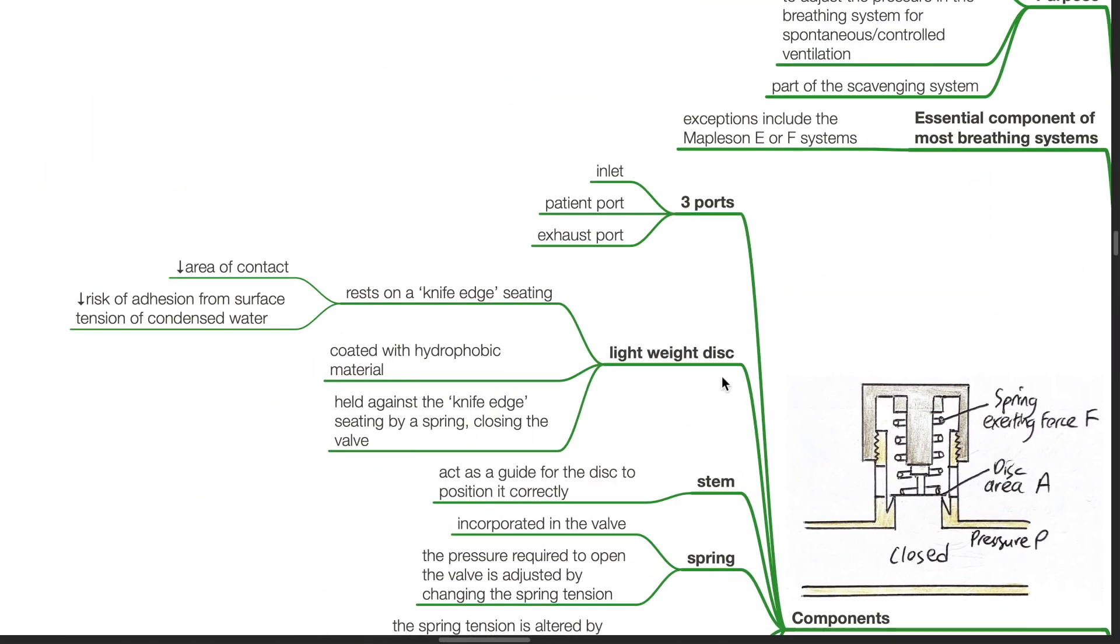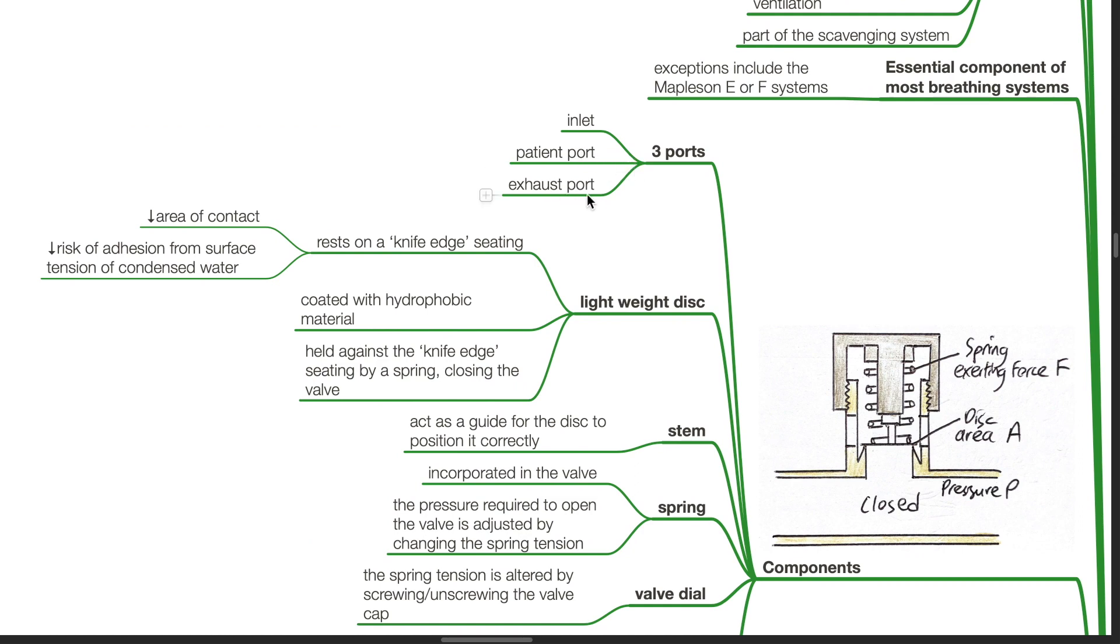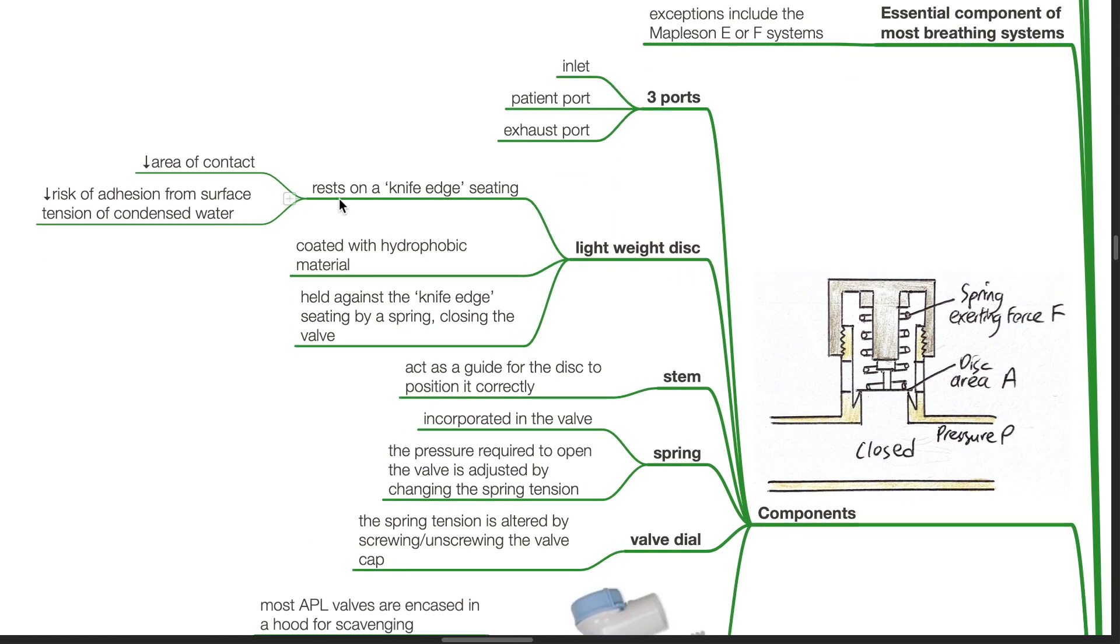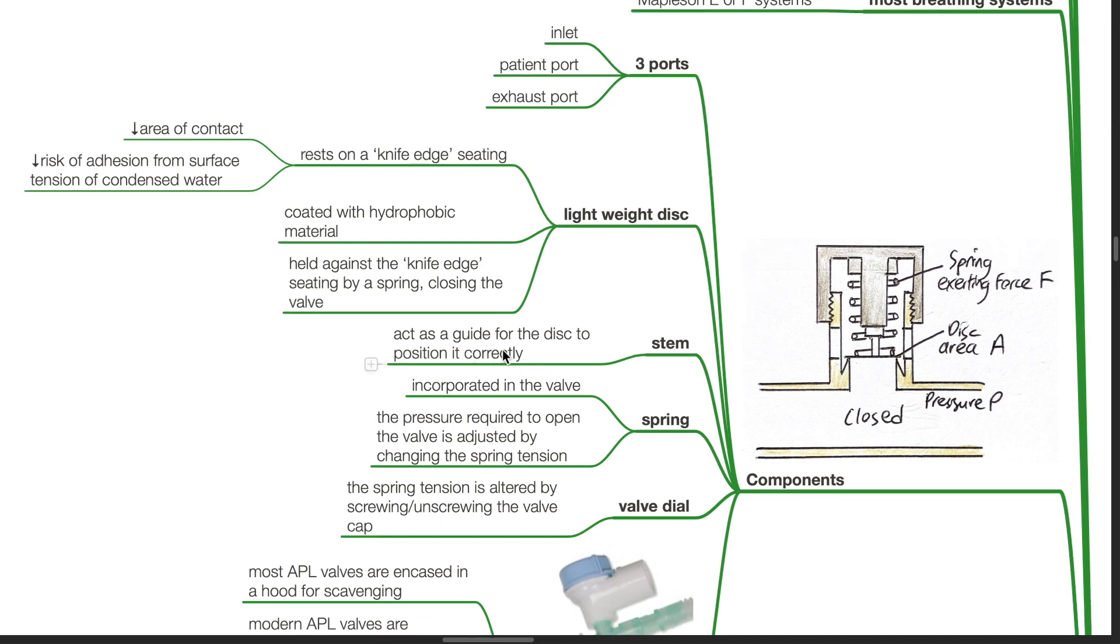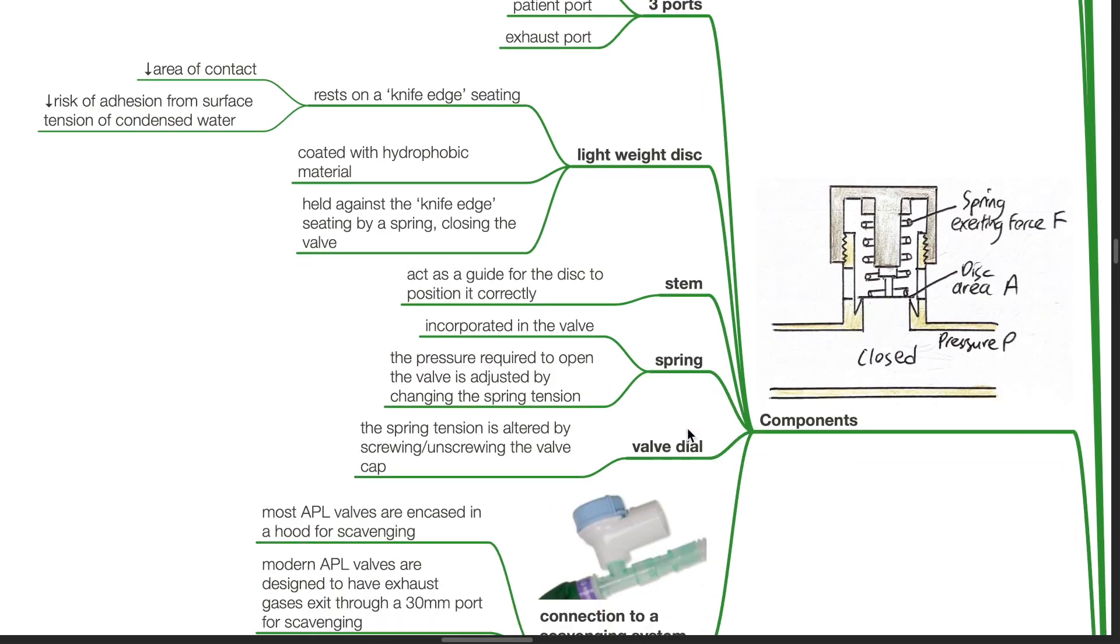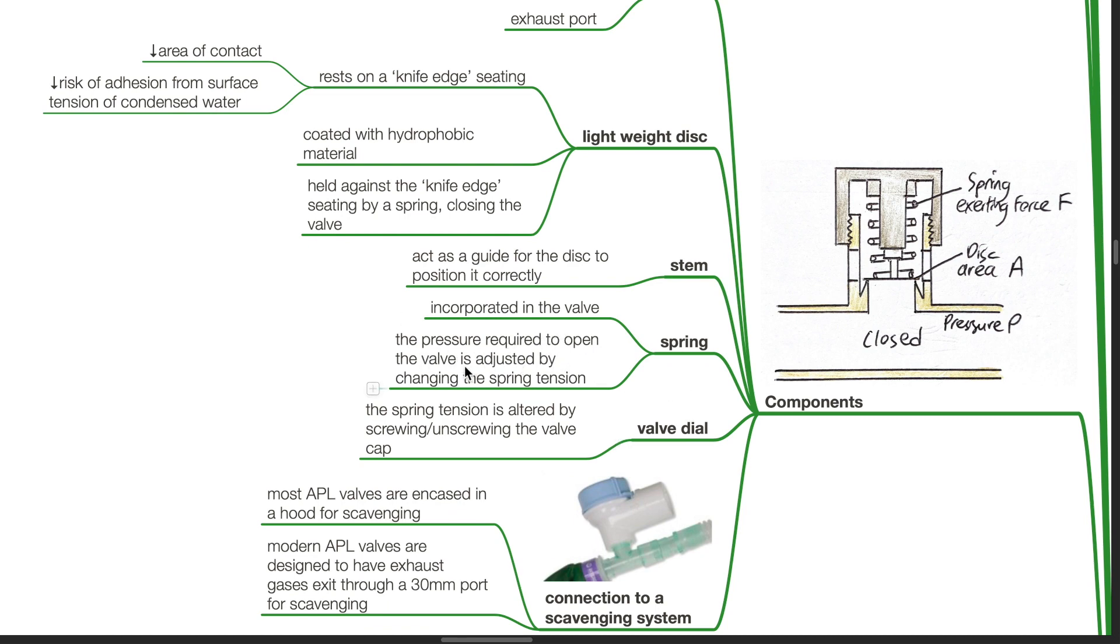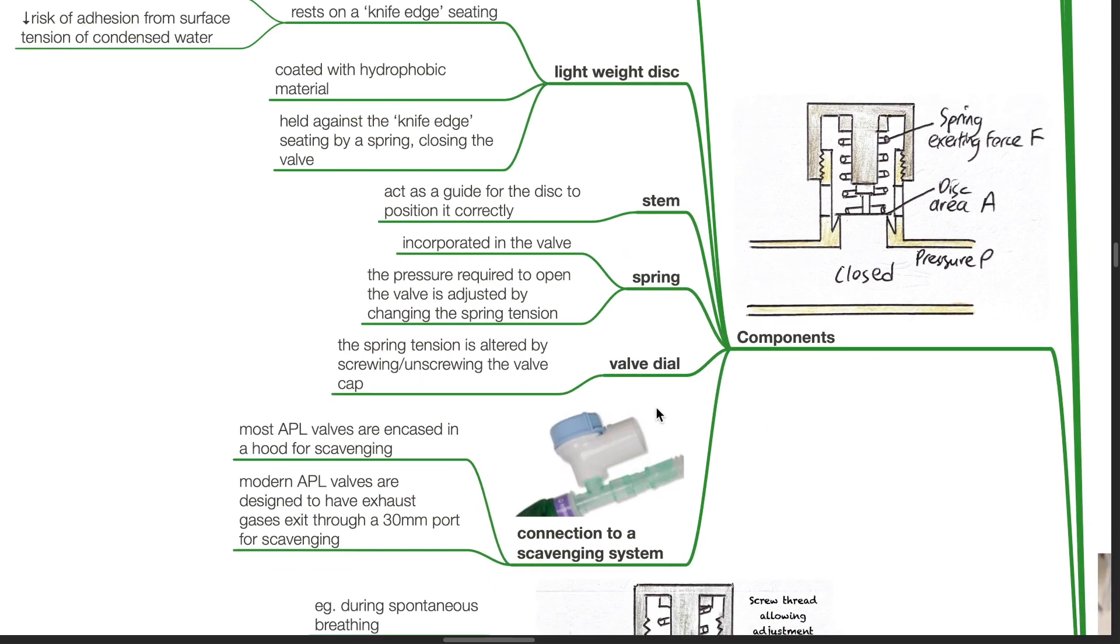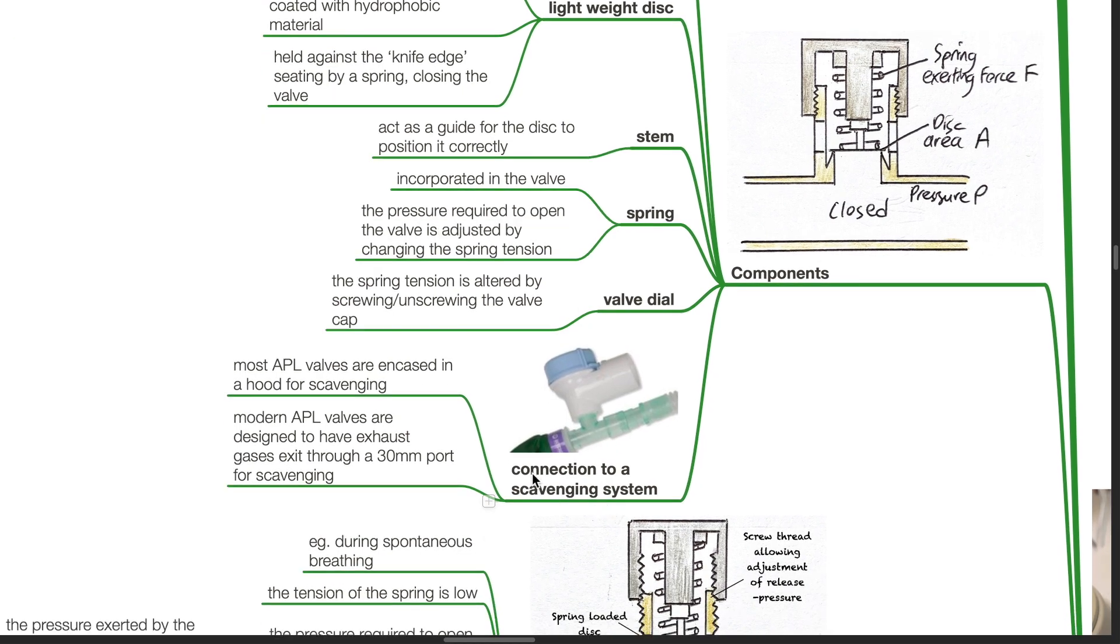Components. It has three ports: the inlet, the patient port and the exhaust port. It has a lightweight disc which rests on a knife-edge seating. This reduces the area of contact and reduces the risk of adhesion from surface tension of condensed water. It is coated with hydrophobic material and held against the knife-edge seating by a spring, closing the valve. The stem acts as a guide for the disc to position it correctly. The spring is incorporated in the valve. The pressure required to open the valve is adjusted by changing the spring tension. The spring tension is altered by screwing or unscrewing the valve dial. It has a connection to a scavenging system. Exhaust gases exit through a 30mm port.